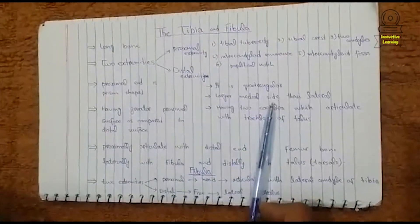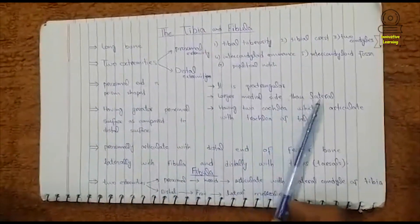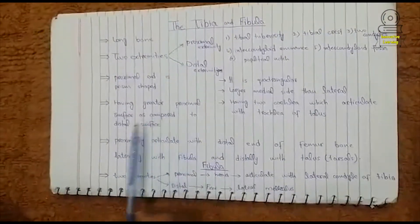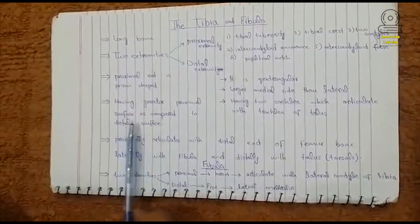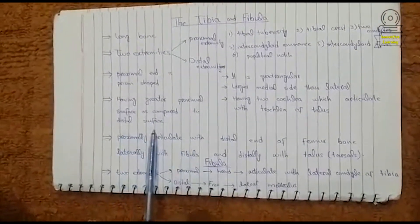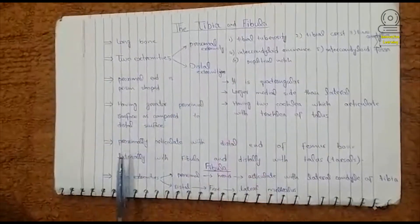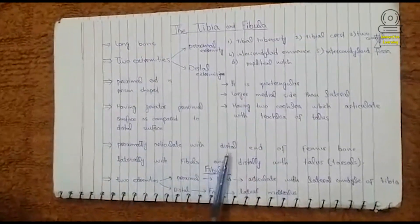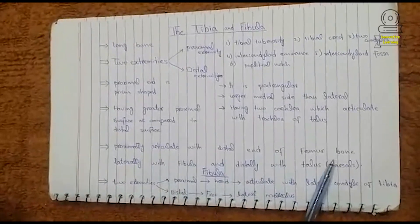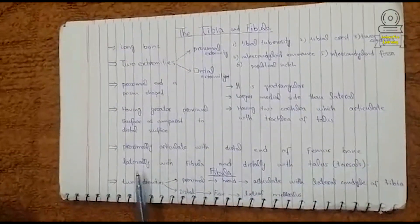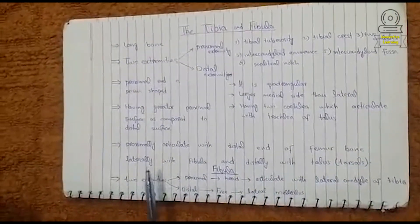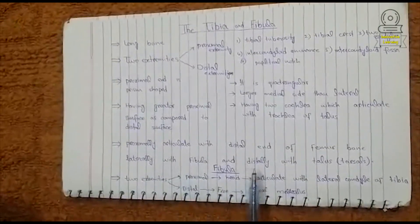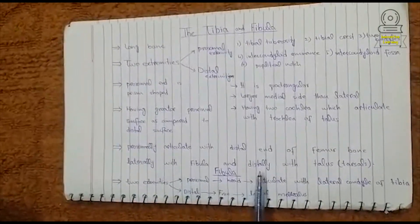The distal extremity has two cochleae which articulate with the trochlea of the tarsal bones, and the distal extremity has a larger medial side than lateral side. The tibia has a greater proximal surface compared to the distal surface. The tibia proximally articulates with the distal end of the femur bone, laterally articulates with the fibula bone, and distally articulates with the tarsal bones.